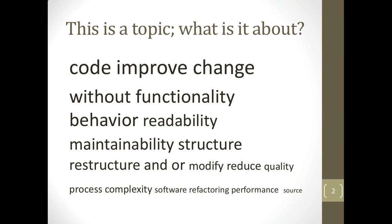A topic is used in things like LDA — it comes out of text analysis. You throw in a bunch of documents and it comes up with a topic, which is a set of words. The words are ordered by weight. For example: code, improve, change, without, functionality, behavior, readability, maintainability, structure, restructure, modify, reduce, quality, process, complexity, software, refactoring, performance, source. If you had to summarize it, that's probably 'refactoring.' This took us at least a few seconds to read and then discuss what to call it — this is what LDA produces.